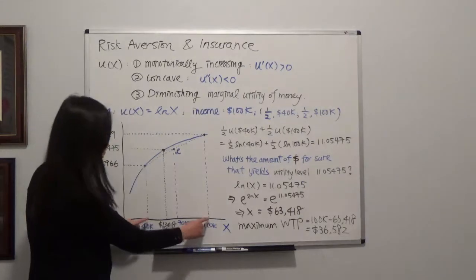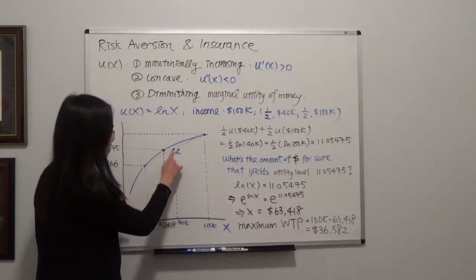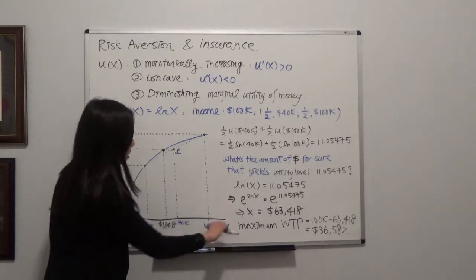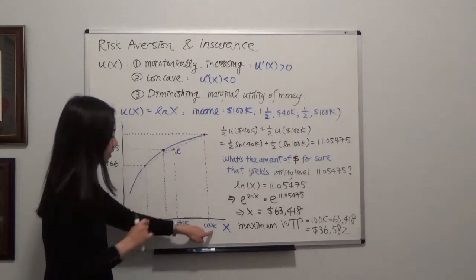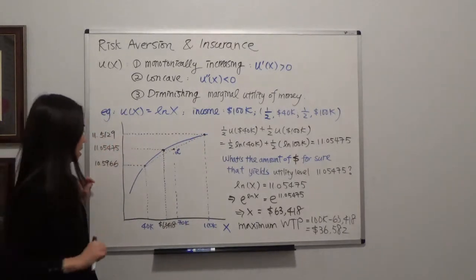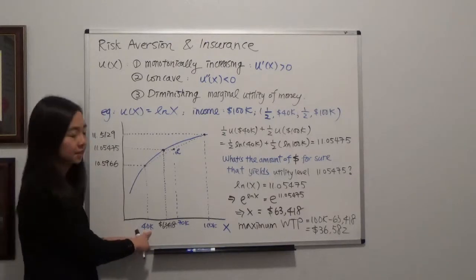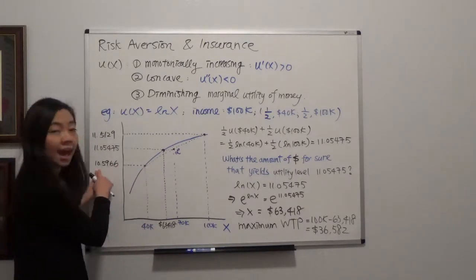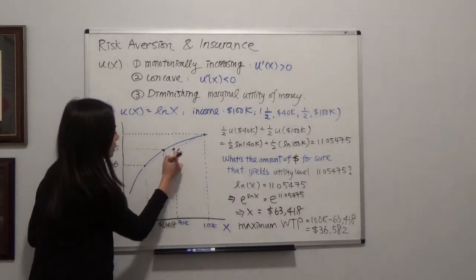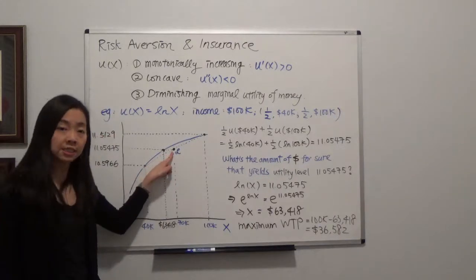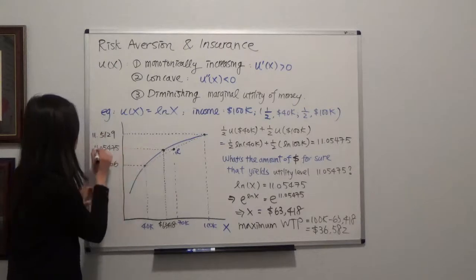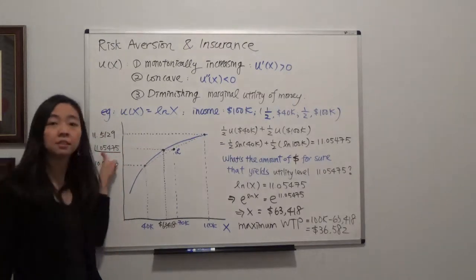Graphically, you are forced to play the lottery. So this expected utility you get from playing the lottery, that's a half times the utility of $100,000, so that will be a half times 11.5129 plus a half times the utility of $40,000. That will be a half times 10.5966. So that point will be the expected utility you get from playing this lottery. That will be your expected utility from that lottery.